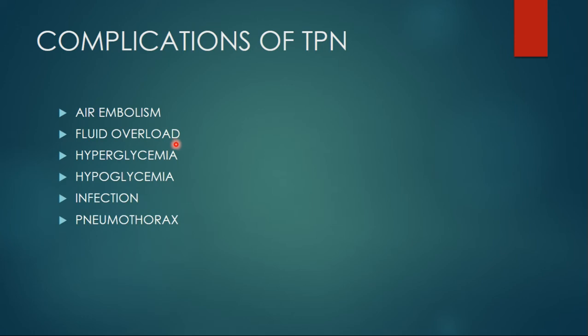The next condition is hyperglycemia. Hyper means high, glycemia means blood sugar, and -emia means blood. So hyperglycemia is a medical term for high blood sugar or high blood glucose level. It occurs when the blood sugar or glucose levels are too high.